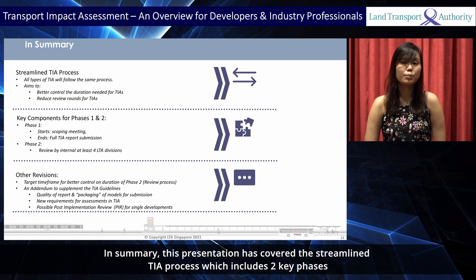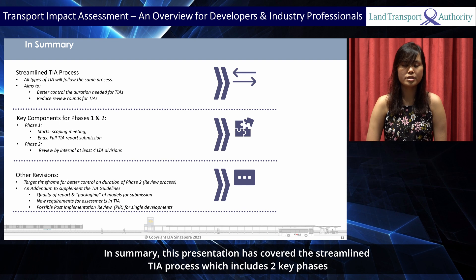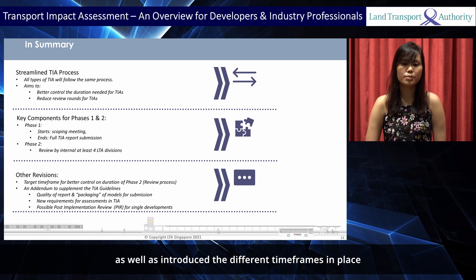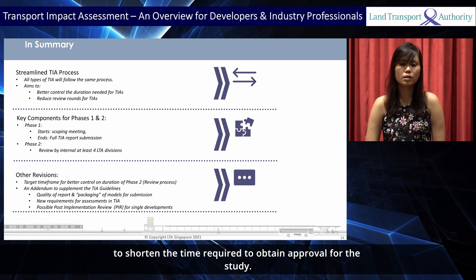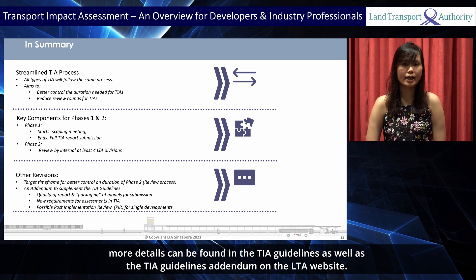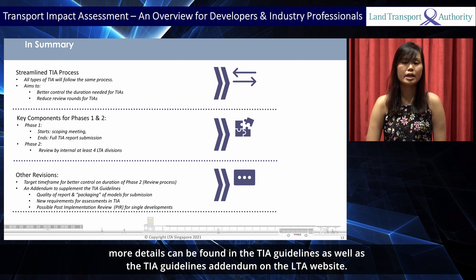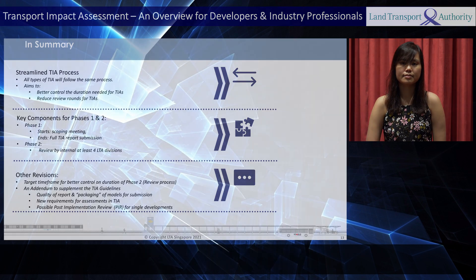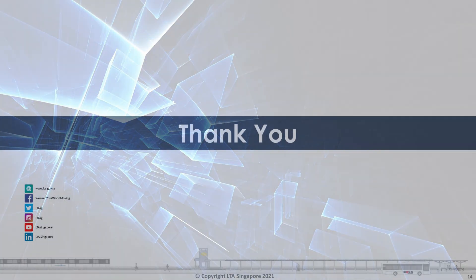In summary, this presentation has covered the streamlined TIA process, which includes two key phases, as well as the different time frames introduced to shorten the time required to obtain approval for the study. More details can be found in the TIA guidelines as well as the TIA guidelines addendum on the LTA website. Thank you.